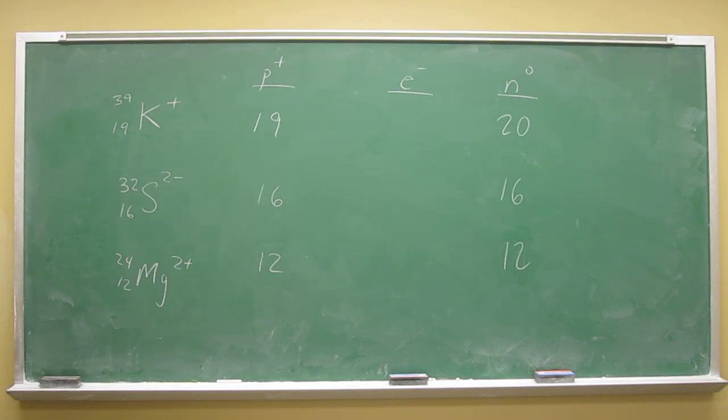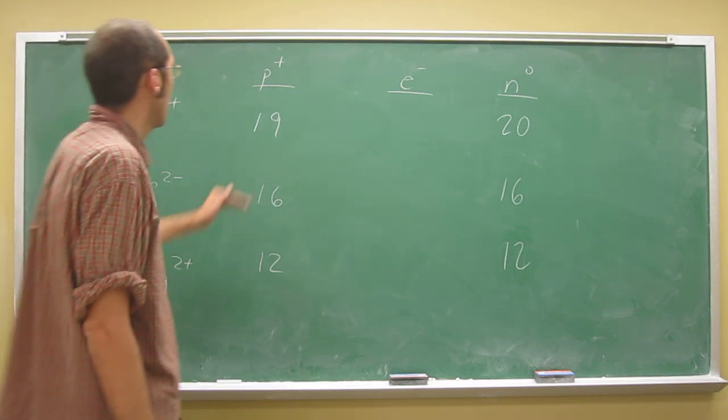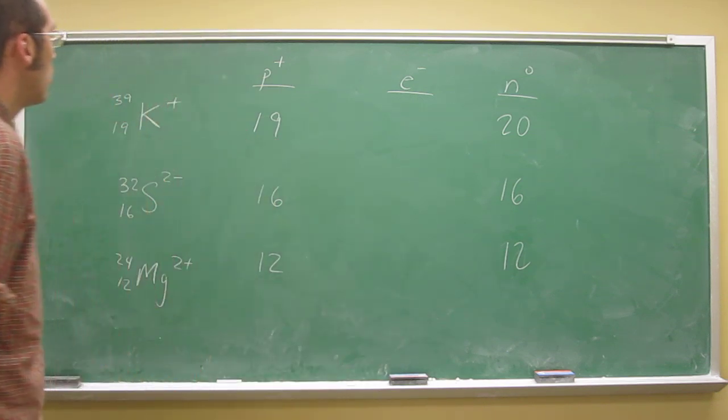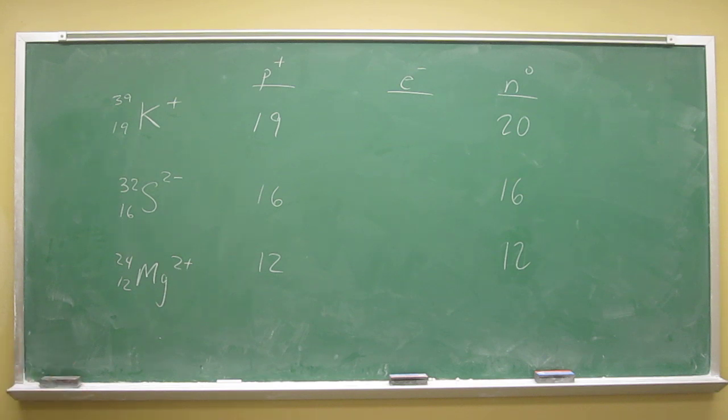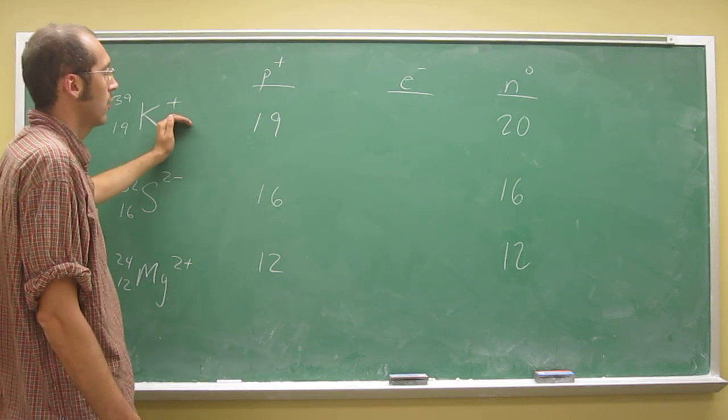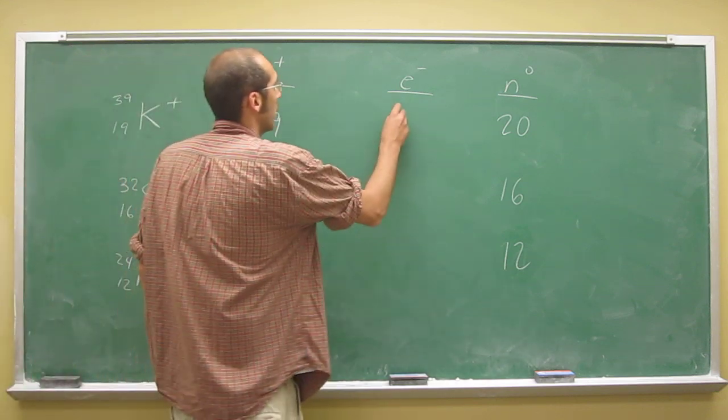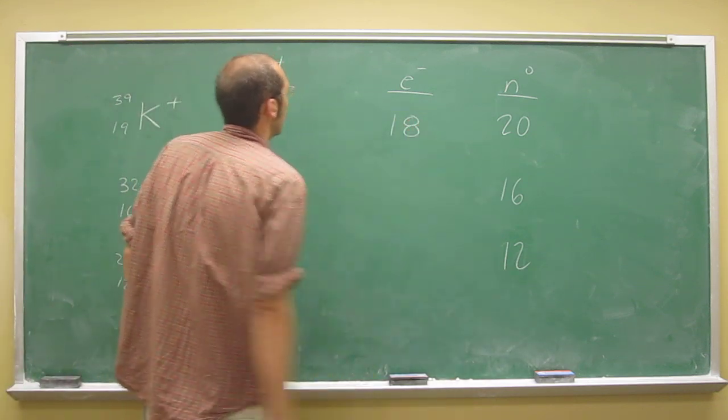The number of electrons would be the same as the number of protons if the atom was neutral, but these are not. Remember, electrons are negatively charged. In this case, it's lost an electron because we got a positive one, so it's 18.